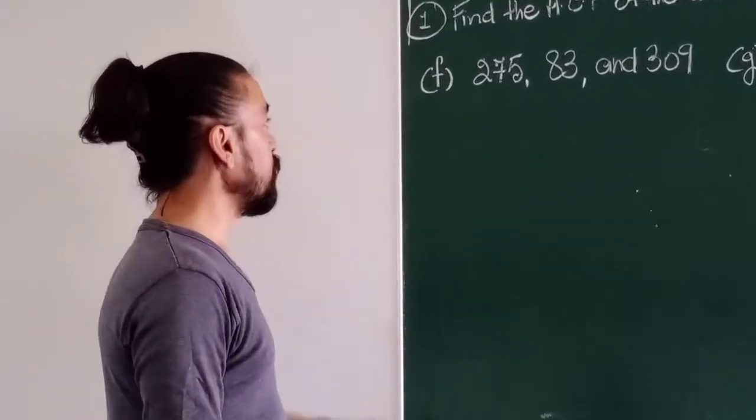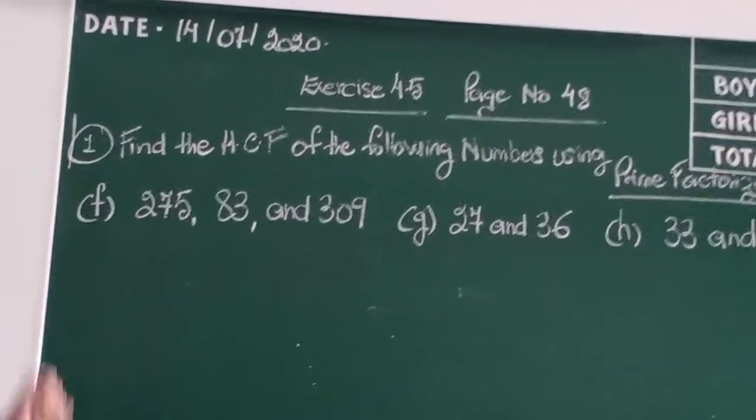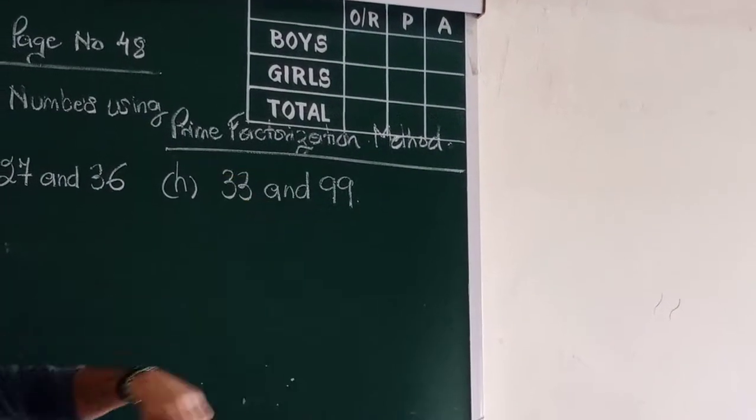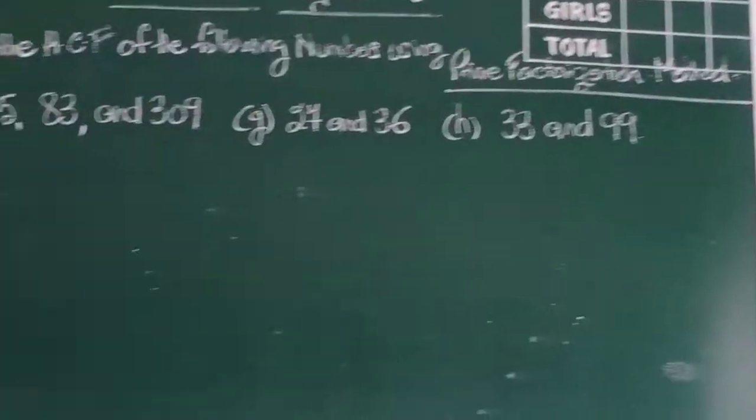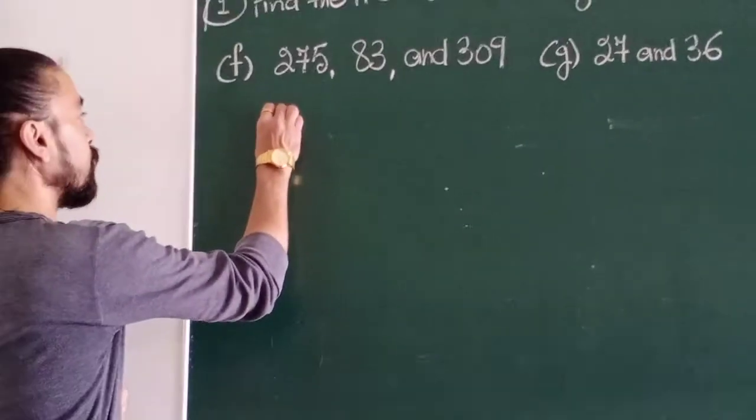So now we are moving on to the next three parts of question number one. Remember we are using the prime factorization method, not the method that they have mentioned, so we need to change that. That is why I got an extra answer. So let's start factorizing these numbers also.